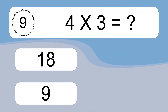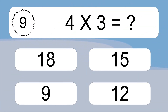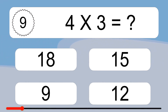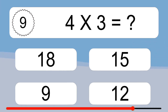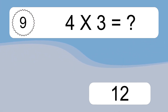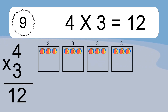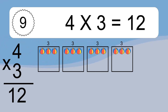4 times 3 equals what? We have 4 boxes, and each box has 3 colorful balls inside. If you count all the balls in all the boxes together, you will have 4 times 3 balls.